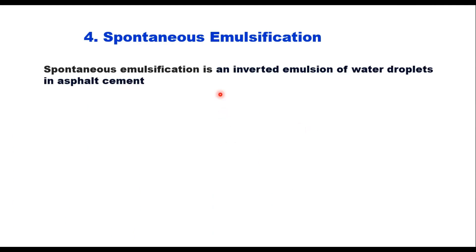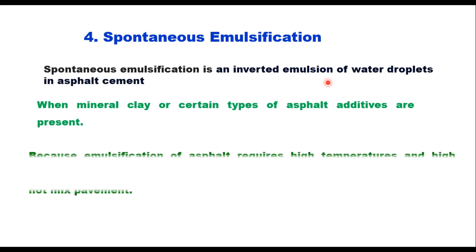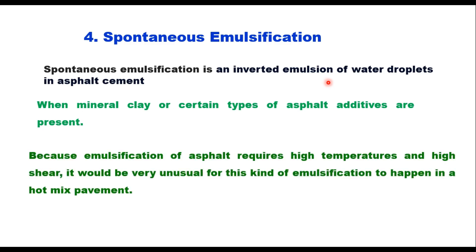Stripping can also happen because of spontaneous emulsification. Spontaneous emulsification is an inverted emulsion of water droplets in asphalt cement. This could possibly be a reason for stripping, especially when mineral clays or certain types of asphalt additives are present. This mechanism will weaken the asphalt-to-asphalt bond due to the presence of water in the asphalt. However, emulsification of asphalt requires high temperature and high shear, which are unusual in a hot mixed pavement, and therefore this is not a very common phenomenon for stripping.